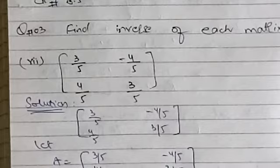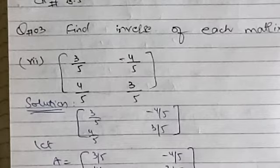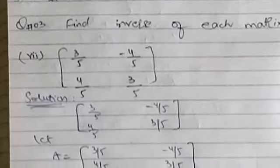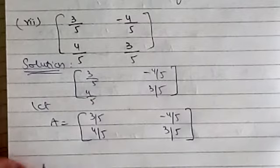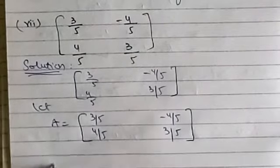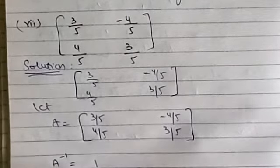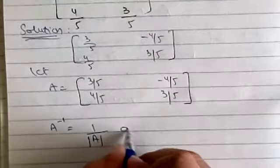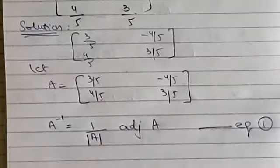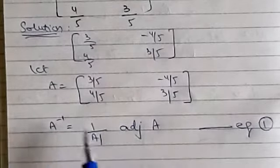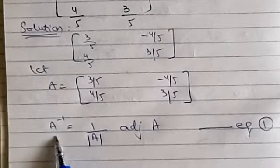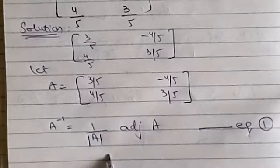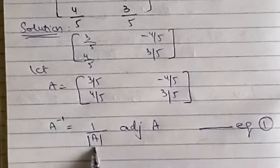We have to find the inverse of matrix A. How do we find the inverse of A? We have a formula: A inverse is equal to 1 over the determinant of A, multiplied by the adjoint of A.